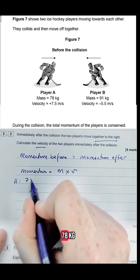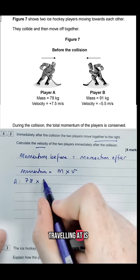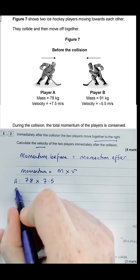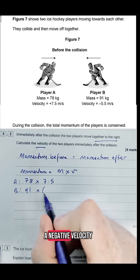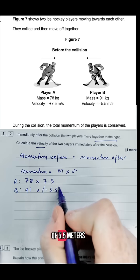So for A the mass is 78 kilograms. The velocity they're traveling at is positive 7.5. And for B we've got a mass of 91 kilograms and they're traveling at a negative velocity of 5.5 meters per second.